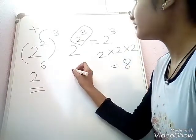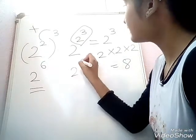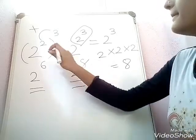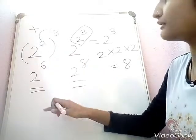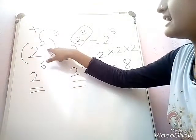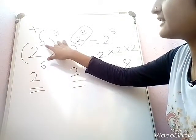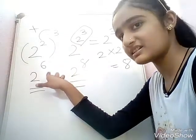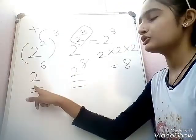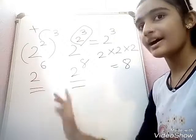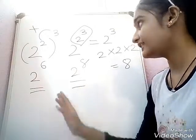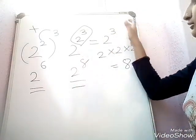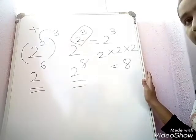Then our answer will be 2 power 8. If there is a bracket, we have to do directly like this — 2 and 3's are 6, then our answer will be 2 power 6. But if there is no bracket like this, then we have to do it differently.